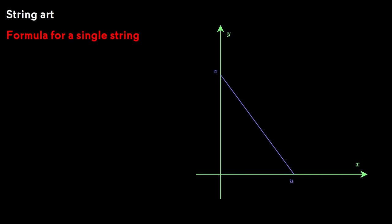Let's begin with coming up with an implicit formula for a single string. We'll stretch the string from a position v units up on the y-axis to position u units to the right on the x-axis.